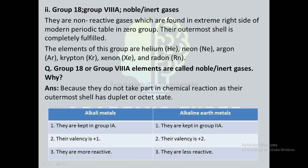Differences between alkali metals and alkaline earth metals: alkali metals are kept in group 1A and alkaline earth metals in group 2A. Alkali metals have valence +1 as they give 1 electron, whereas alkaline earth metals have valence +2 as they give 2 electrons. Alkali metals are more reactive and alkaline earth metals are less reactive.